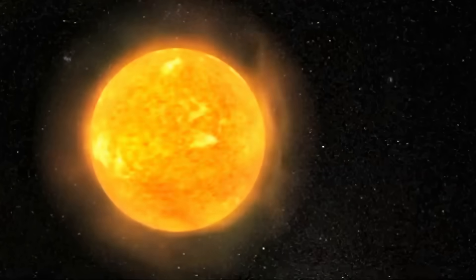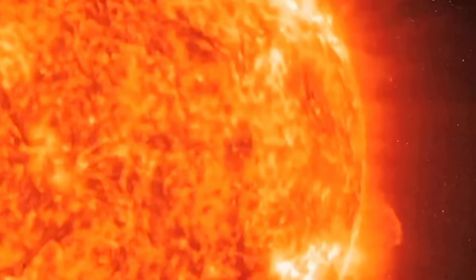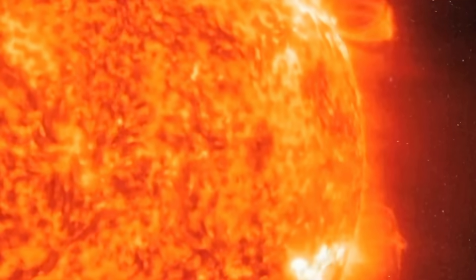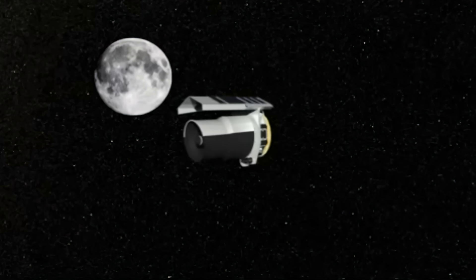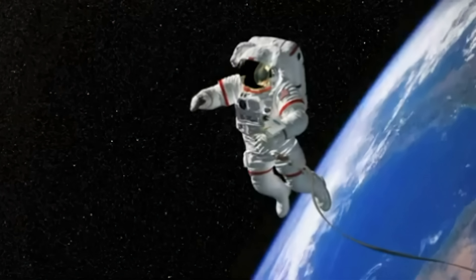Viewing our sun in multiple wavelengths with the SOHO satellite allows scientists to study and understand sunspots that are associated with solar flares and eruptions harmful to satellites, astronauts, and communications here on Earth.